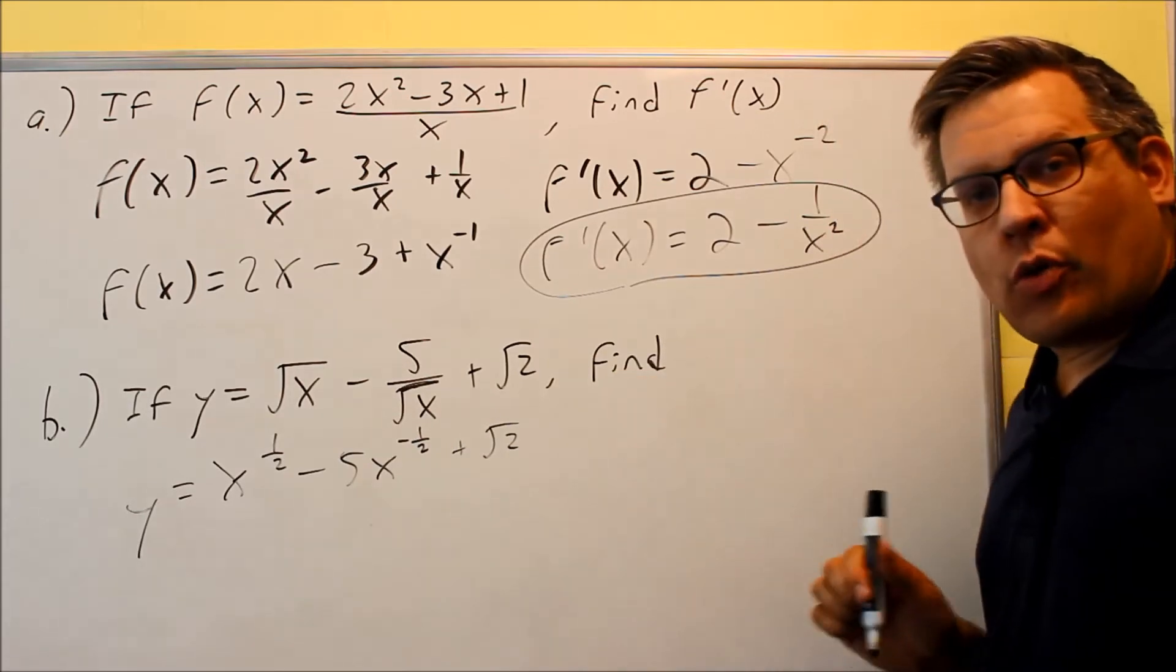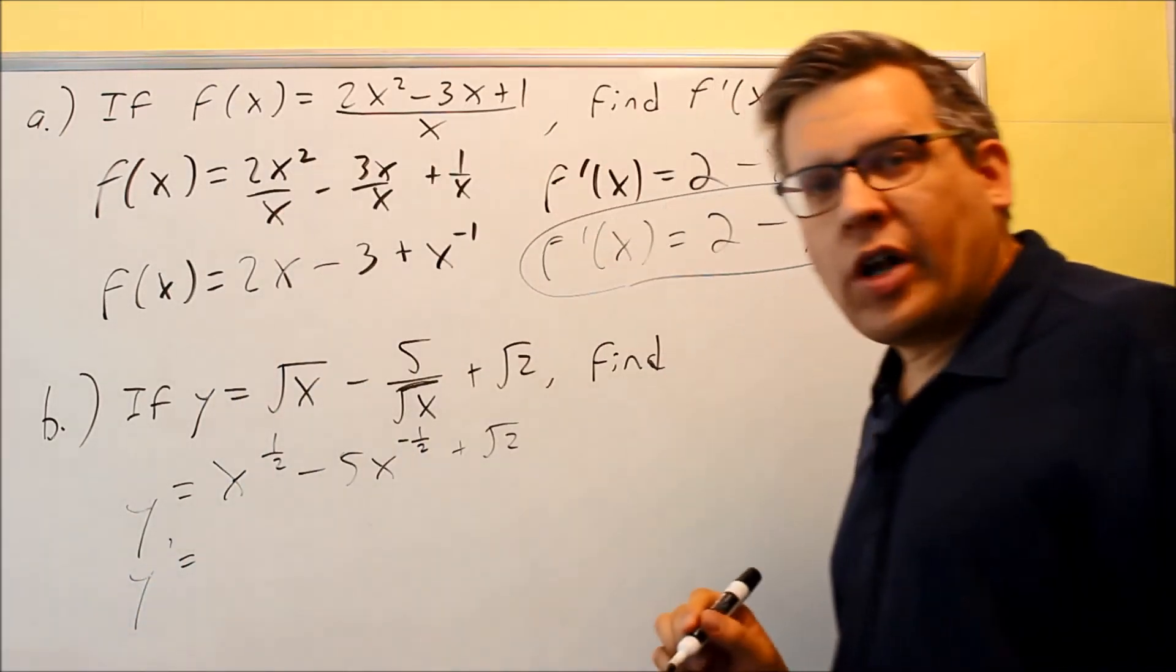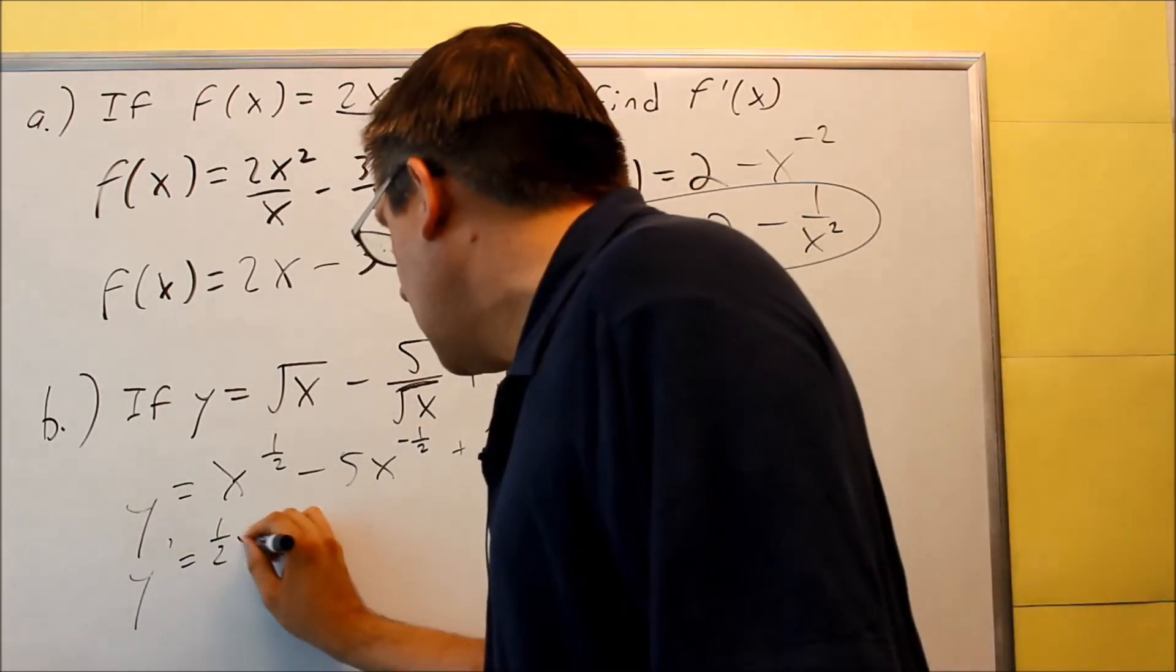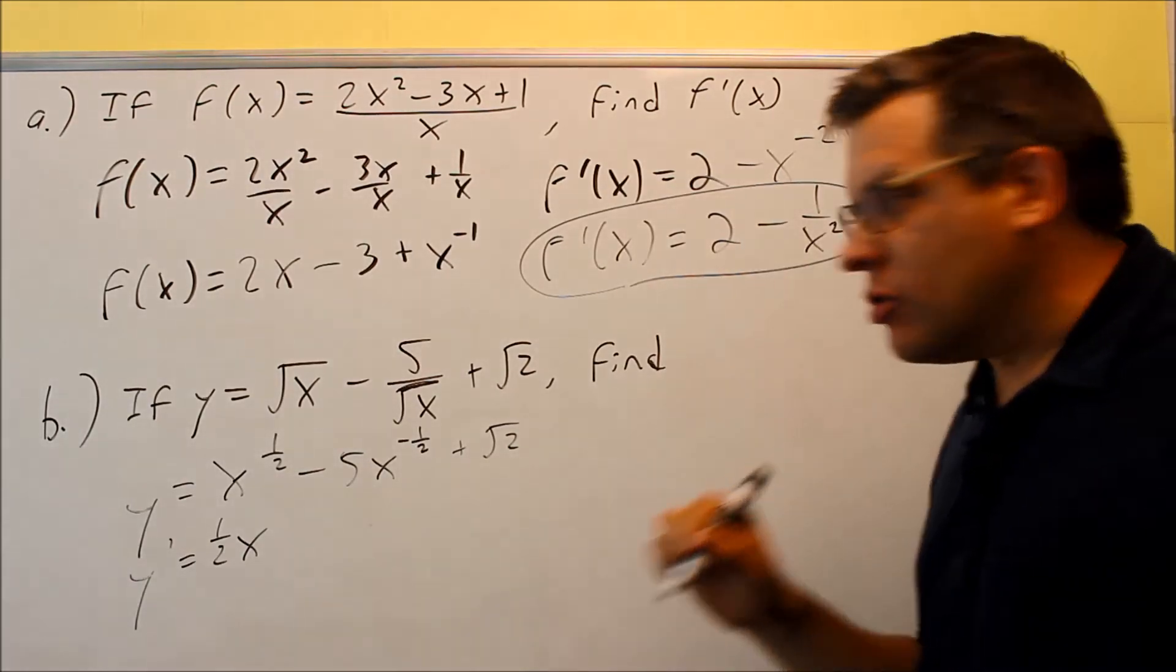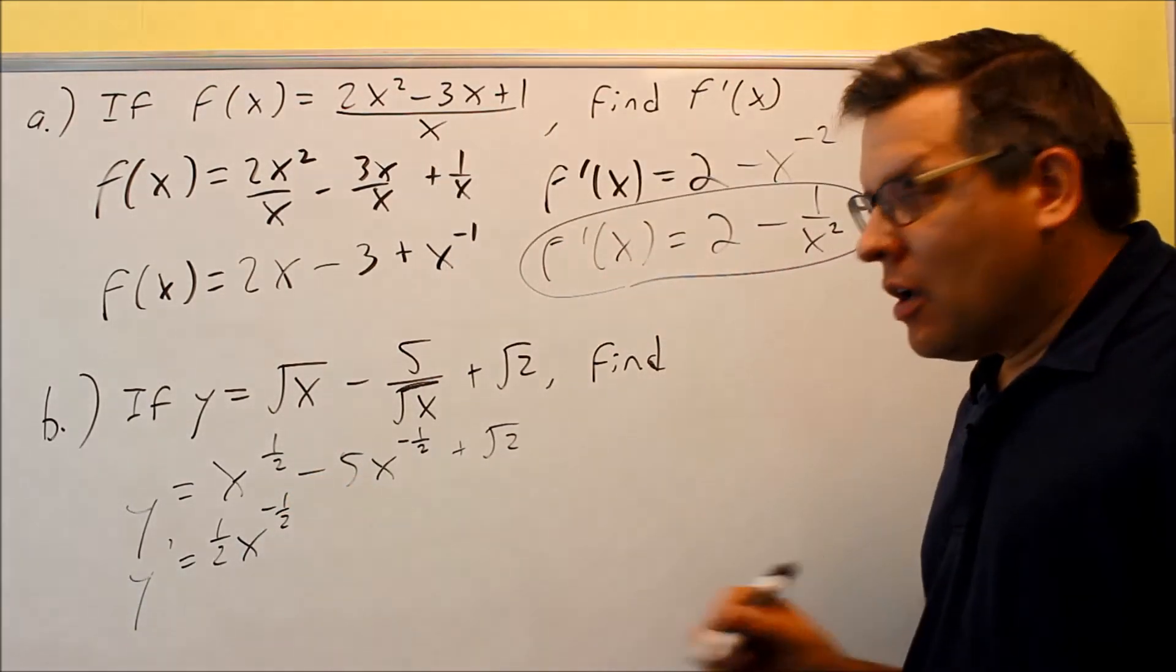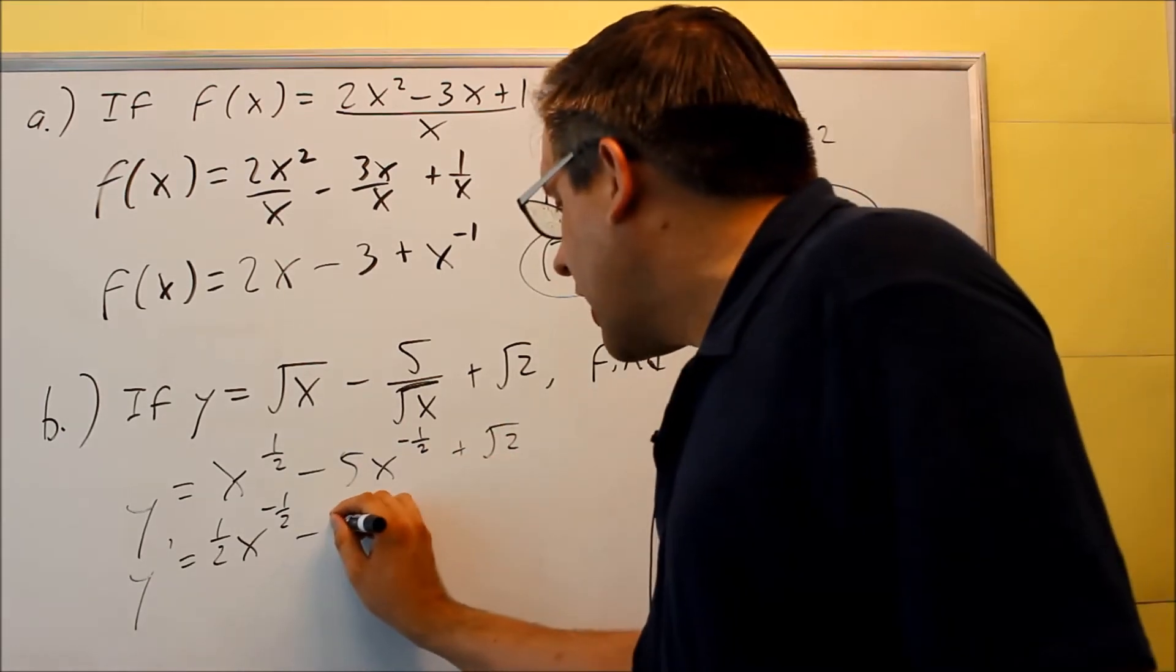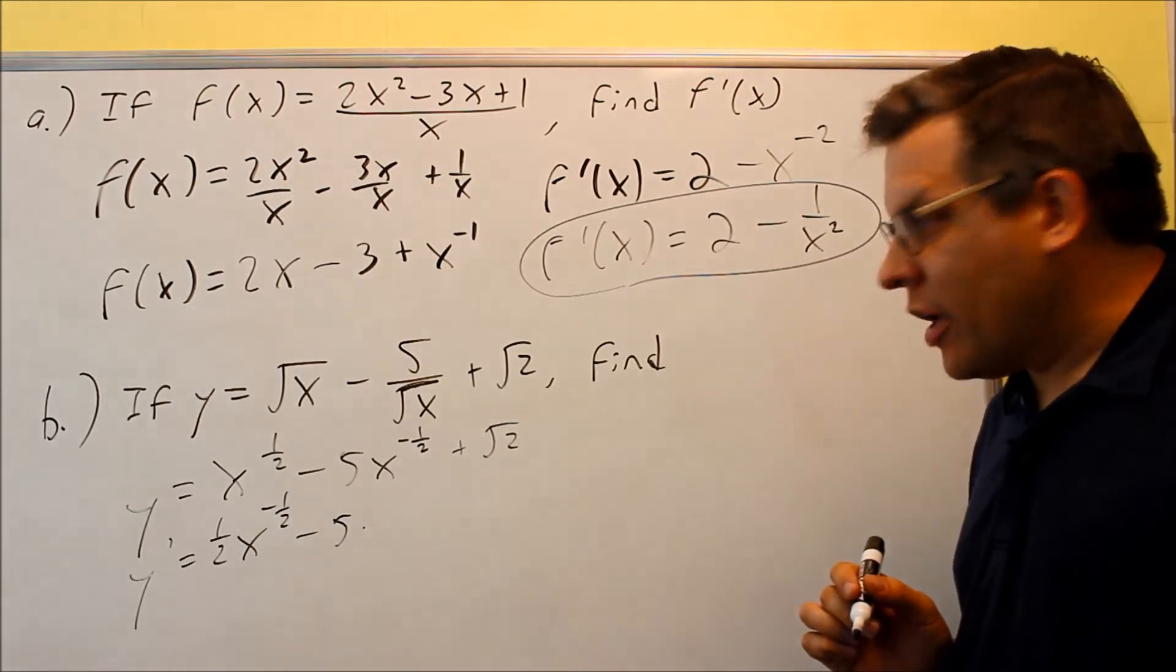Now that we have it set up properly, we're ready to use the power rule. 1 half is going to come down. Subtract 1 from the power. So 1 half minus 2 over 2, you'll get negative 1 half. For this one, I have negative 5, but then I'm going to multiply it by the derivative of x to the negative 1 half.